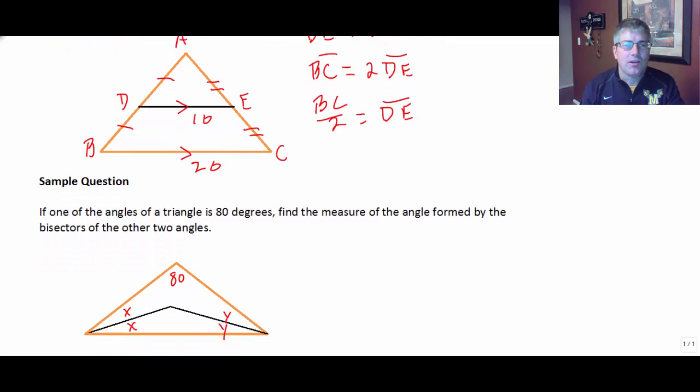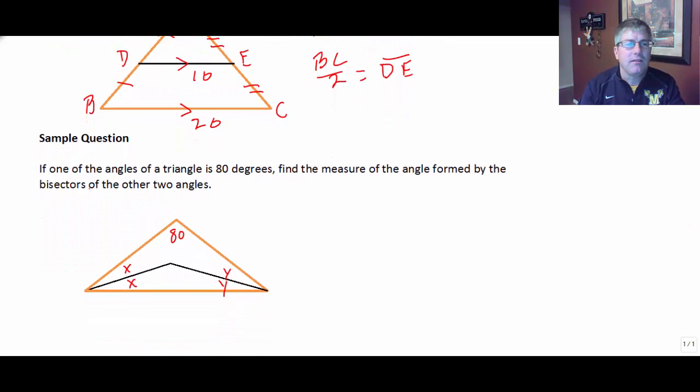Let's do a sample question for this section. Let's see what we have here. The sample question says, If one of the angles of a triangle is 80 degrees, find the measure of the angle formed by the bisectors of the other two angles.